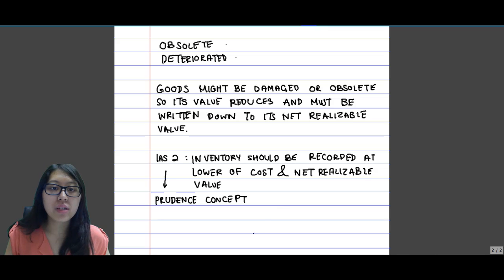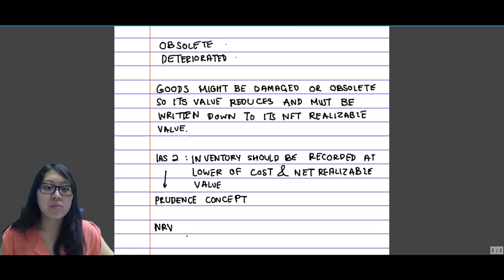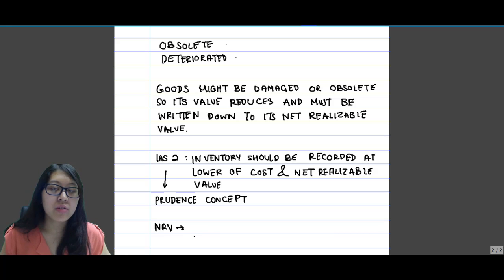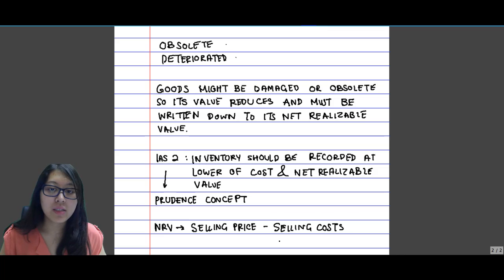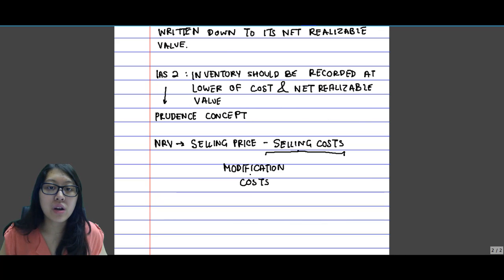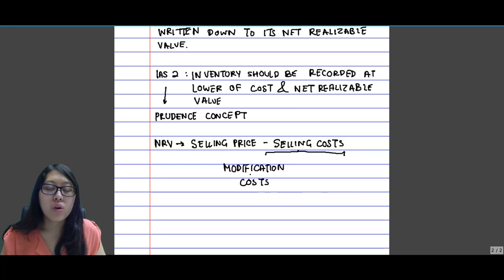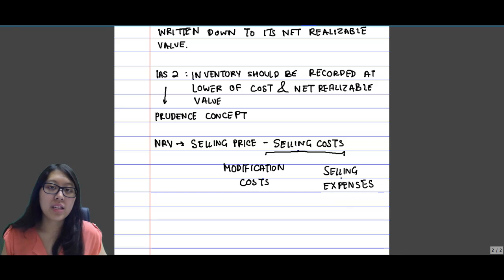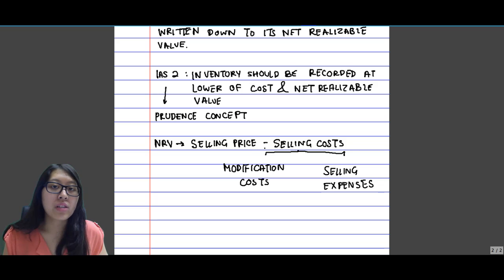This follows the prudence concept, in which any losses should be recognized beforehand. Net realizable value, or NRV, is made up of the selling price minus any selling costs. Selling costs are either modification costs — costs you have to incur in order to get the inventory saleable again — or they could simply be your selling expenses, such as marketing expenses. Whichever is lower, that is what the inventory should be valued at.